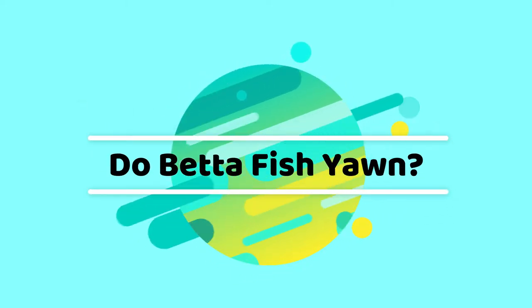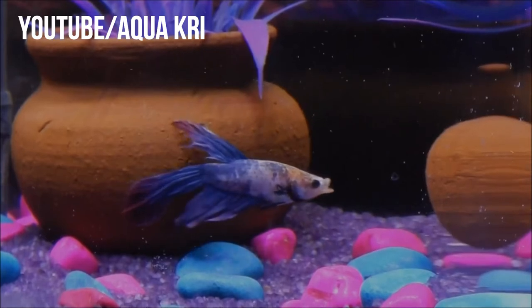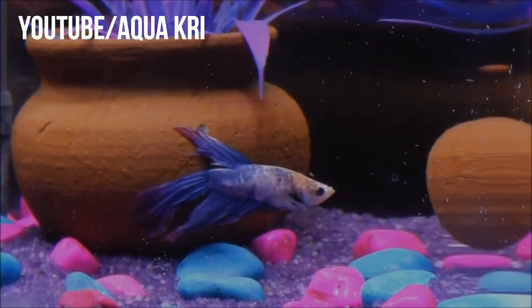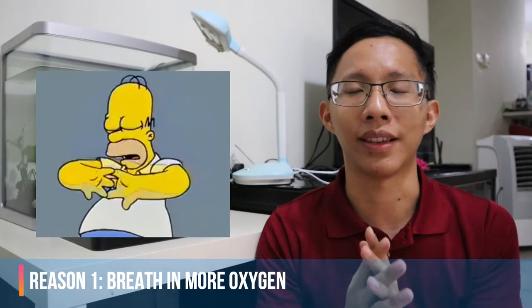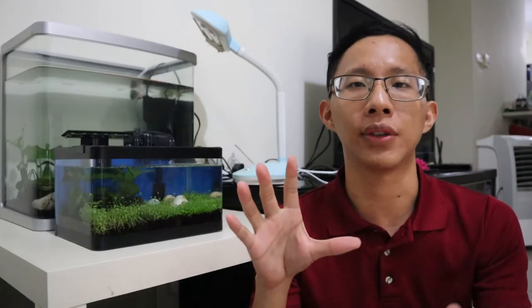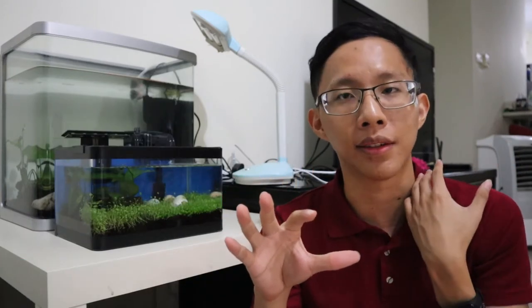So the question is, do betta fish yawn? The answer is yes, they do, but there are several reasons why they could be opening their mouth really big and then closing it again. The first reason, of course, is really like yawning for humans—they are actually opening their mouth to take in more oxygen into their system.